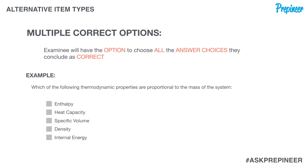To give you an illustration — this isn't a problem we're going to be working, but just to show what some of these problem types may look like. Here's an example problem: it states which of the following thermodynamic properties are proportional to the mass of the system, and we're given four or five properties.